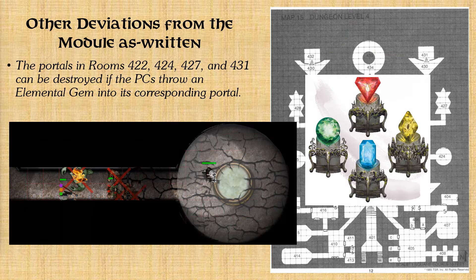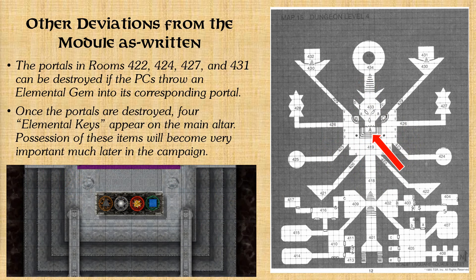Another change: if the characters get down to the fourth level and access those portals to the elemental planes, the portals can be destroyed by throwing the corresponding elemental gem into the appropriate portal. When the characters destroy all four elemental portals, four elemental keys appear on the main altar — and possession of these elemental keys becomes important much later in the campaign.